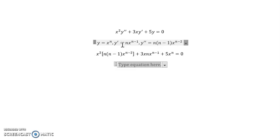And when we combine our powers of x, x squared, x^(n-2), we get x^n. And distributing our n terms, and then 3n x^n and 5x^n. And we factor out our x^n.